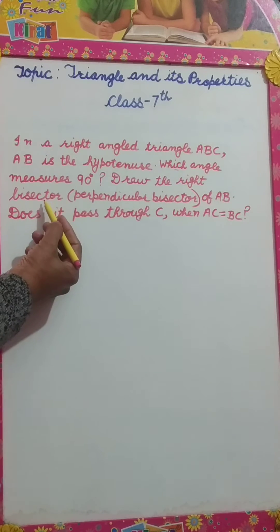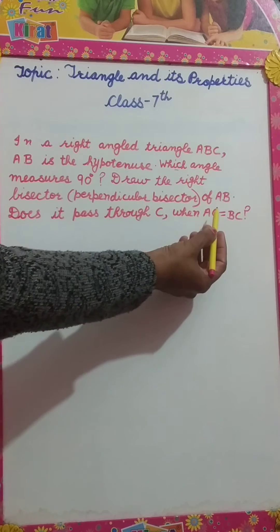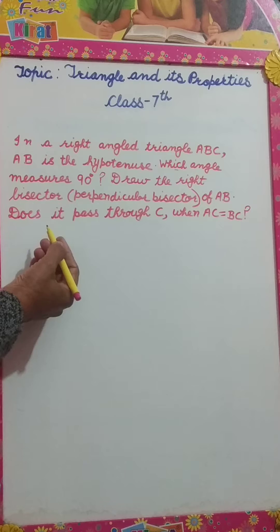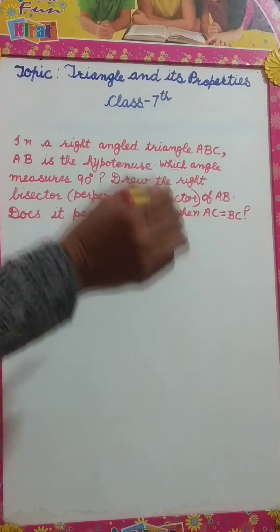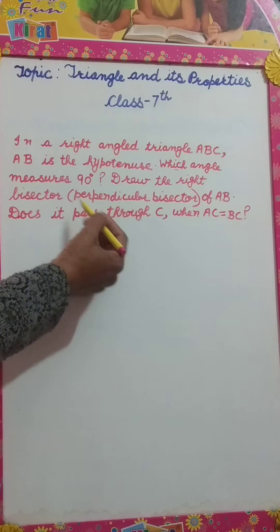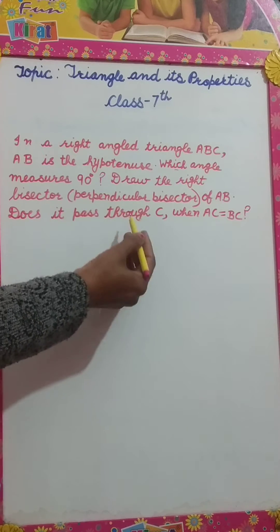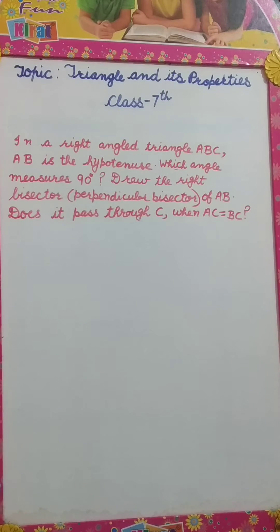Draw the right bisector, or you can say perpendicular bisector, of AB. Does it pass through C? Does the perpendicular bisector pass through C when AC is equal to BC?